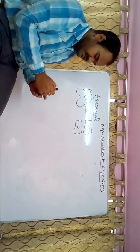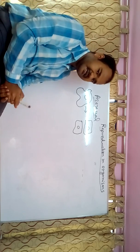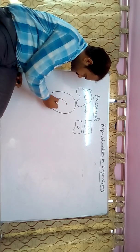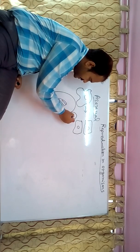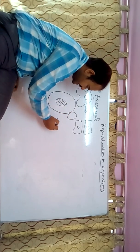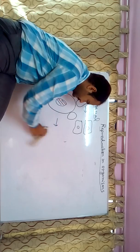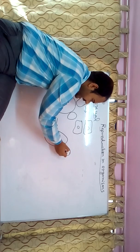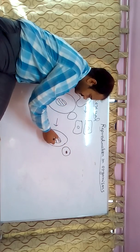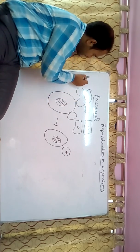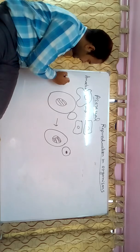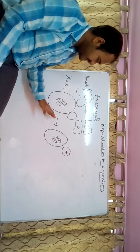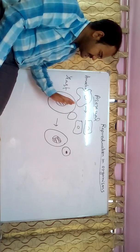Binary fission is a type of asexual reproduction. In the case of yeast, budding occurs — a bud is created and after some time that bud grows into another yeast organism. So binary fission is seen in amoeba and budding is seen in yeast; these are examples of asexual reproduction.